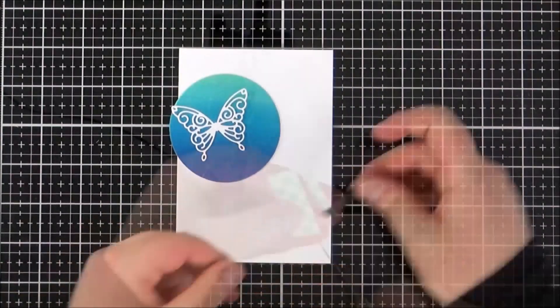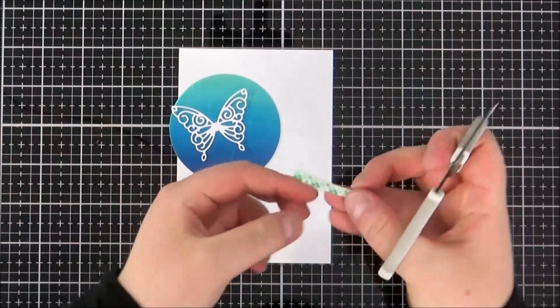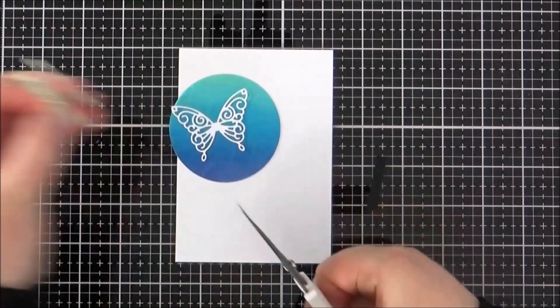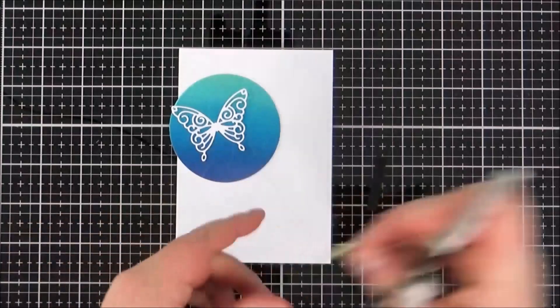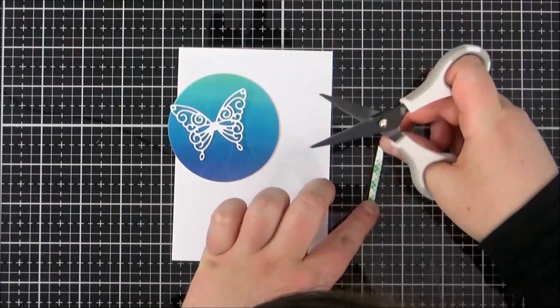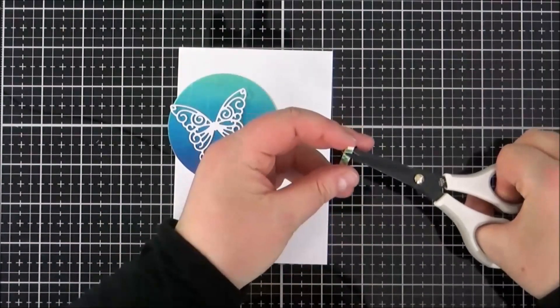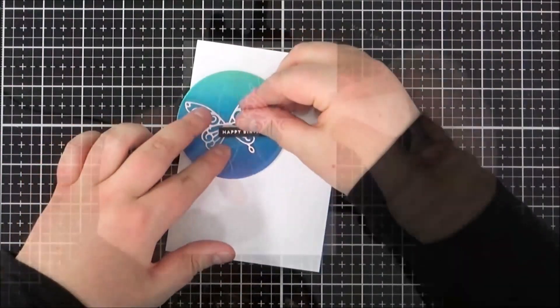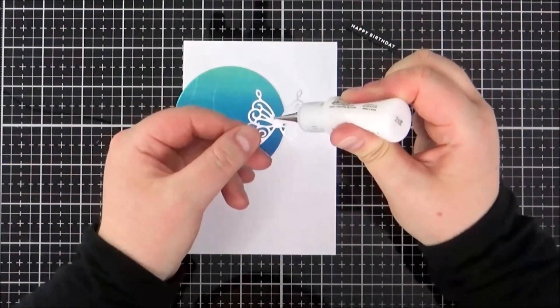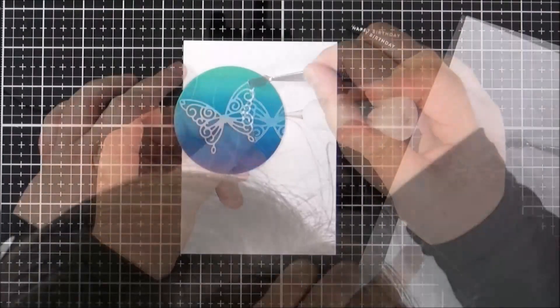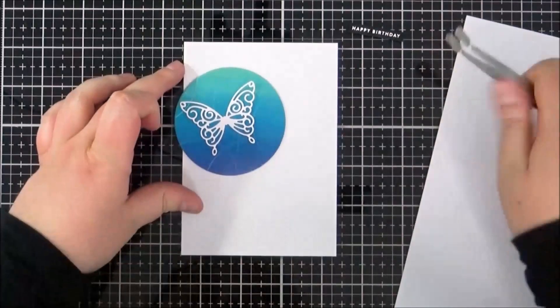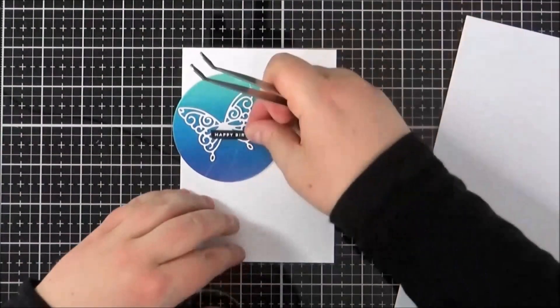I've cut the Liana butterfly die from white cardstock. This is my sentiment piece, and I'm adding some foam tape onto the back of it. That's going to stick down onto my circle piece, overlapping the butterfly. Where I figured out where I want those to be, I'm sticking down the butterfly with some multi-medium matte.